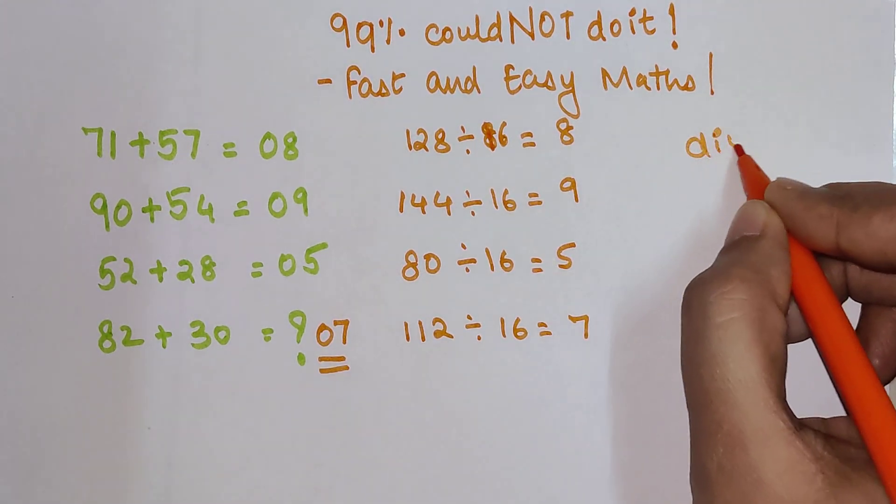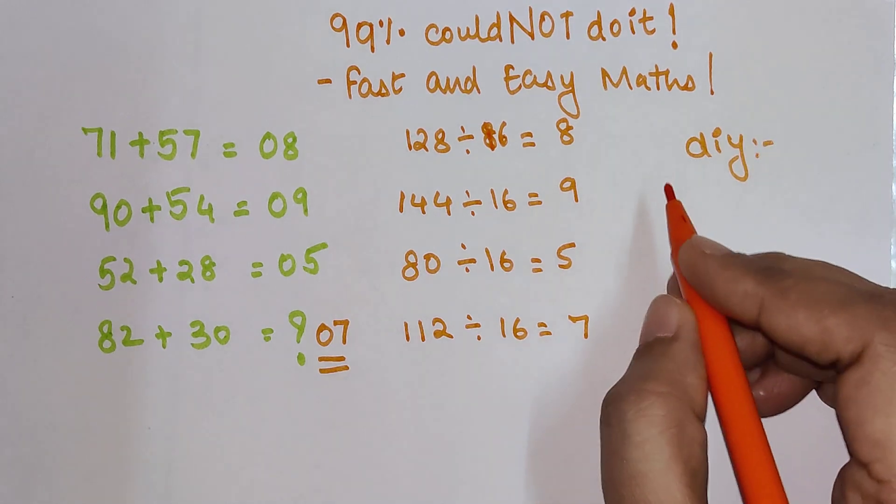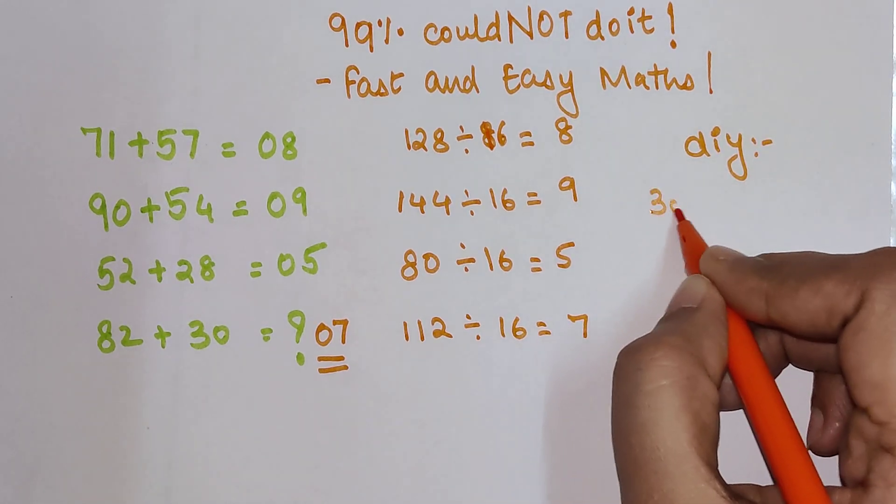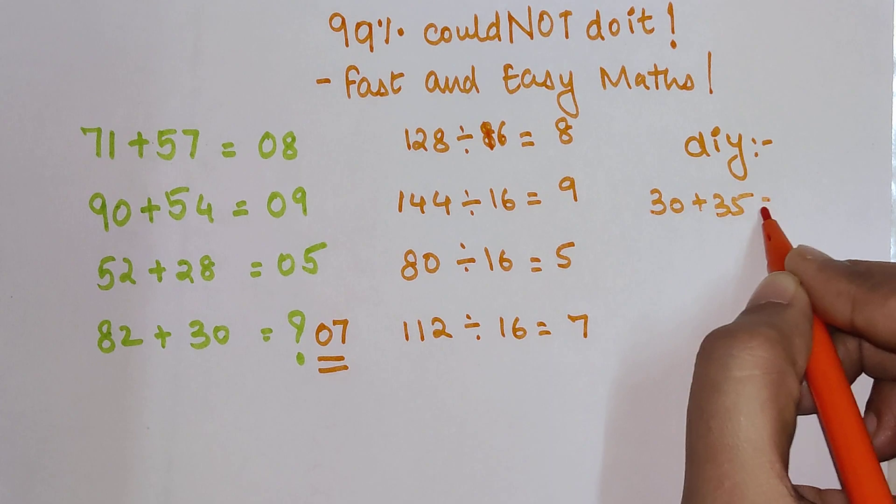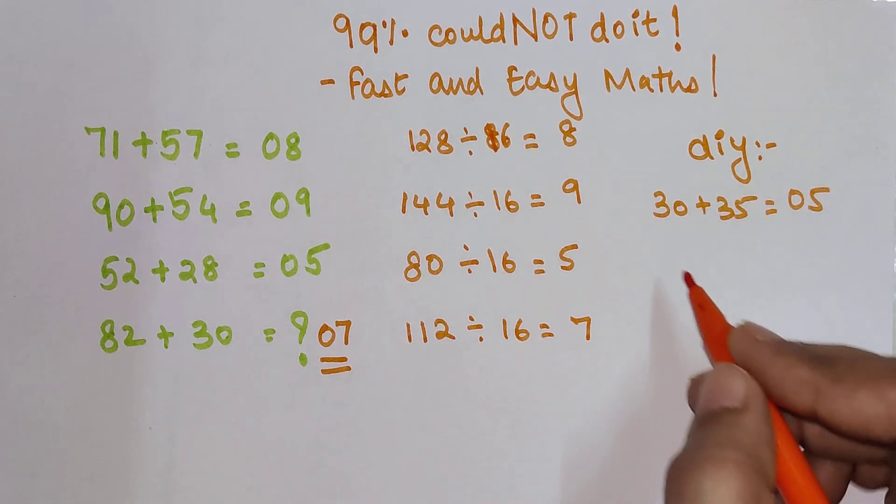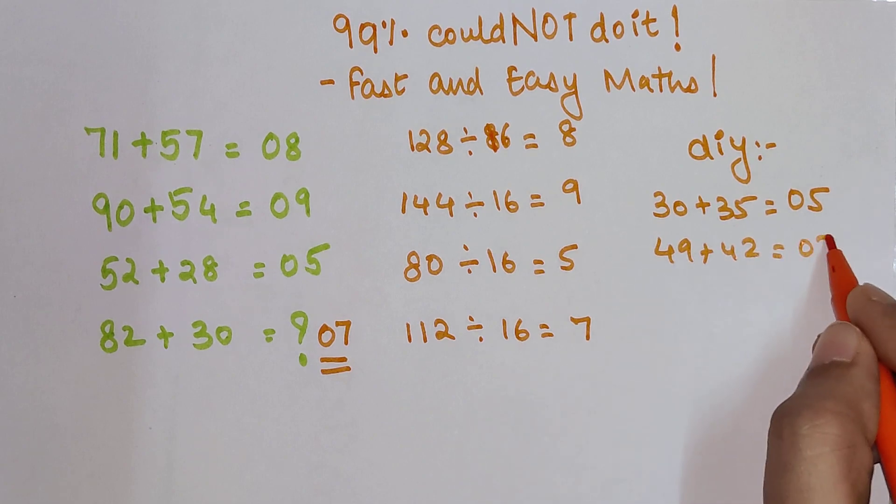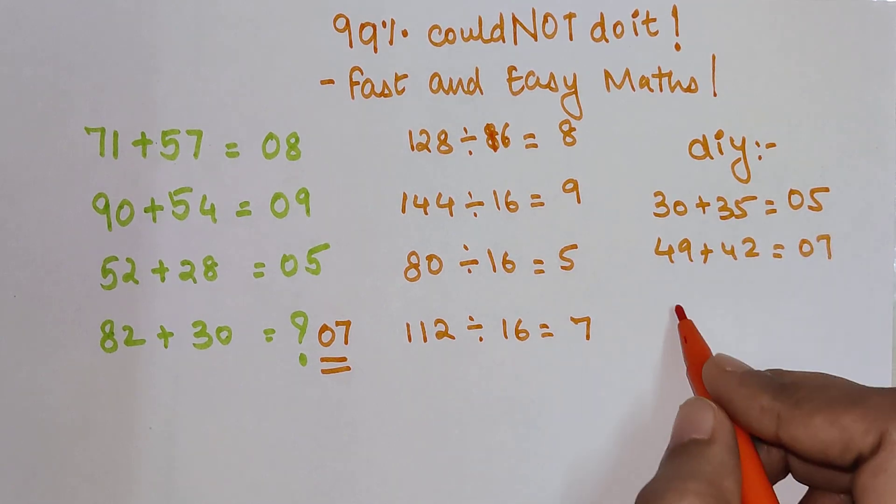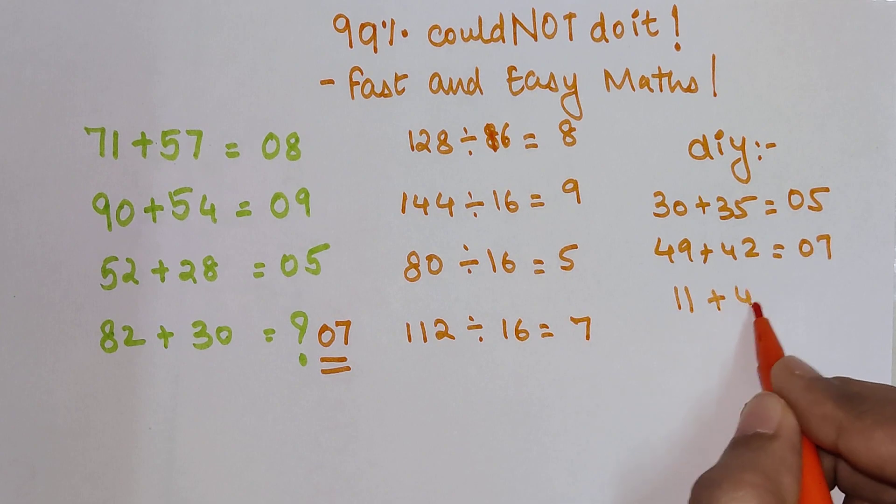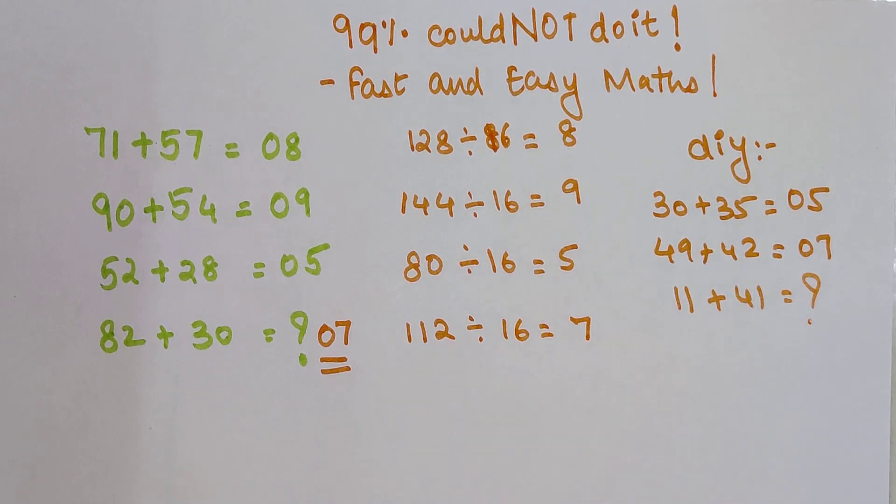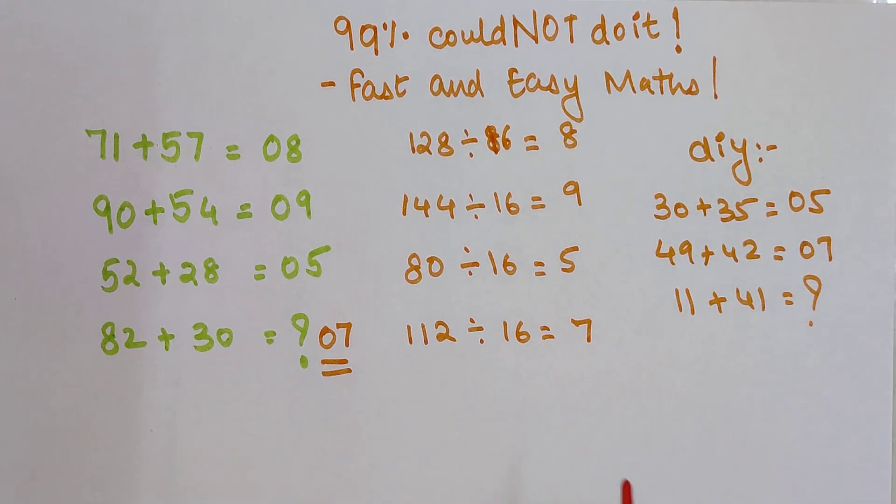Okay, so now time for your DIY. You have to tell me if 30 plus 35 is getting you 05, 49 plus 42 is getting you 07, then you have to tell me what is the value of 11 plus 41. Do let me know your answers in the comment section. And don't forget to give a like and share this video with your friends.